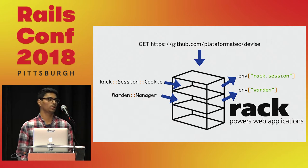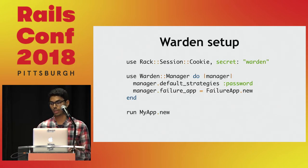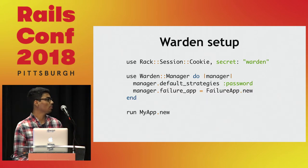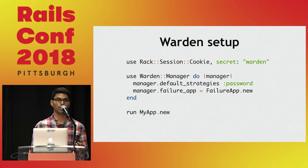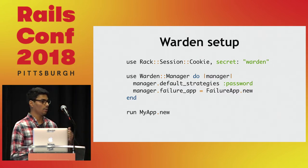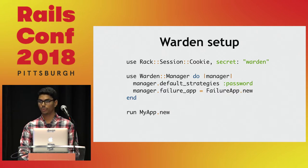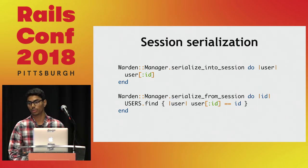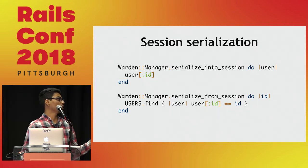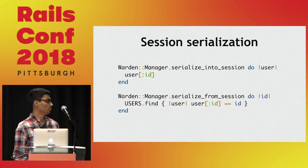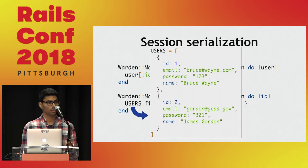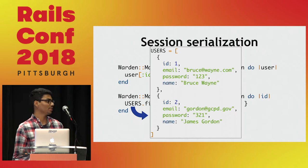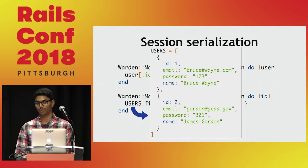To use Warden in a Rack application we have to do some setup. First we have to say which middlewares we want to use — here we are using the session cookie middleware and Warden's middleware, and the order matters, so we have to declare Warden after the session cookie middleware. Another thing we have to do is say how the user is going to be serialized into and from the session. Here we're storing the user's ID and using that same ID later to find the user. Our users here is just an array — we have two users, Bruce Wayne and James Gordon, with plain text passwords just to keep the example simple.